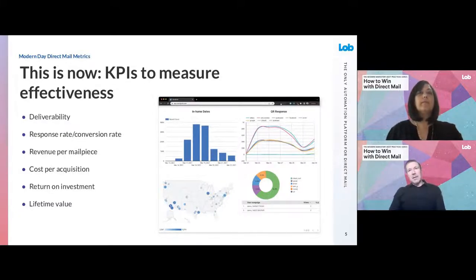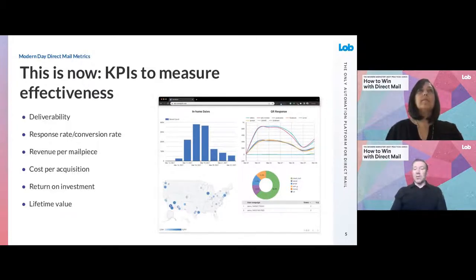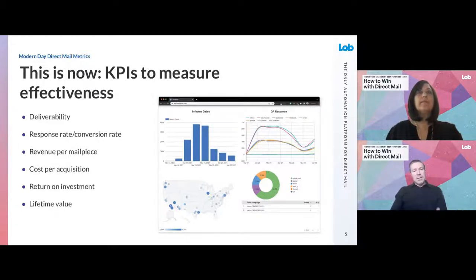All of the manual, tedious spreadsheet work can be abstracted away through automation — for example, using Lob's webhook infrastructure or API endpoints to retrieve this data automatically. Then it feeds into your BI tools so you can marry it against your marketing data, accounting systems of record, and web analytics data to paint a holistic picture of the success of your direct mail campaigns.